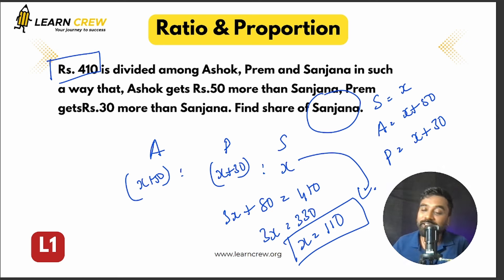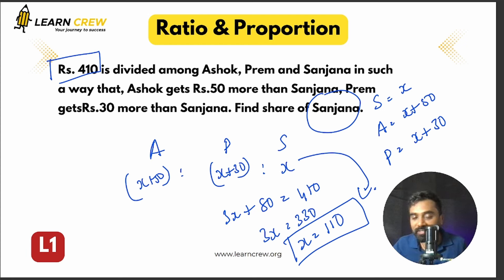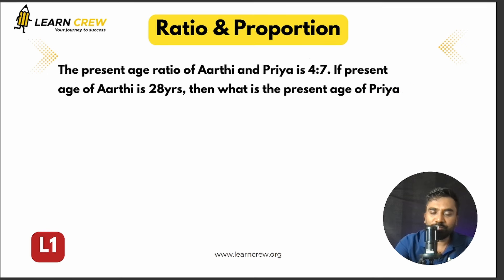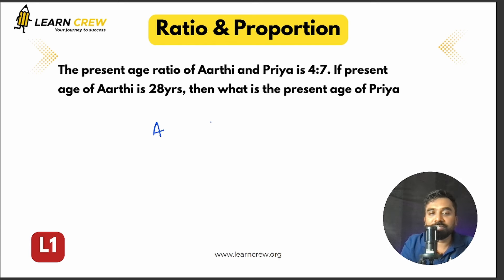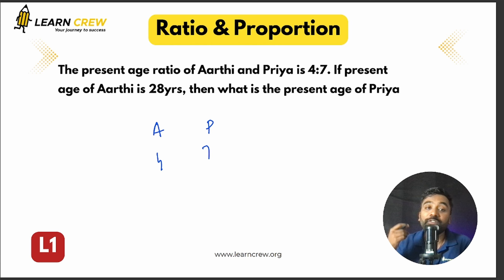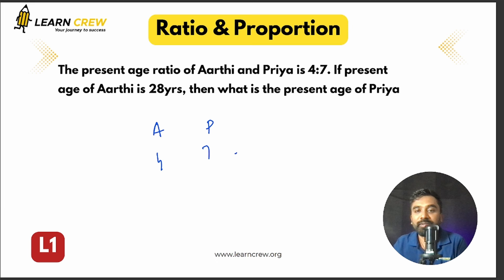Word-based problems like these are also very straightforward. Practice is key — do not leave it. The more problems you solve, the more you get used to the pattern. Next: the present age ratio of Aarti and Priya is 4:7, and Aarti's present age is 28 years. Find Priya's present age.